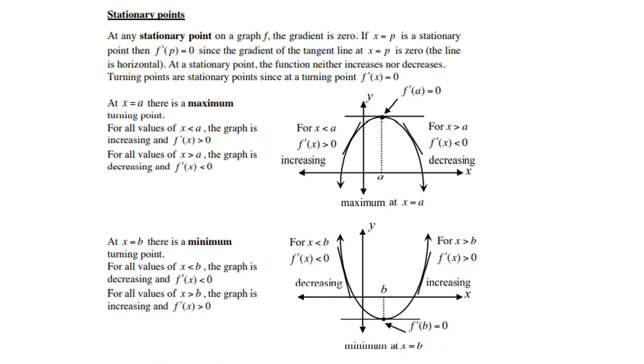A graph with a minimum turning point is the other way around. It moves from a negative gradient through zero into a positive gradient. It's exactly the opposite of a graph with a maximum turning point. This behavior is important to note.